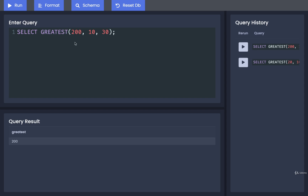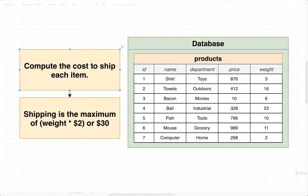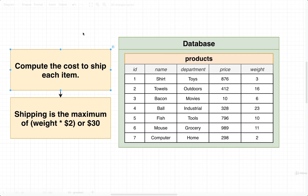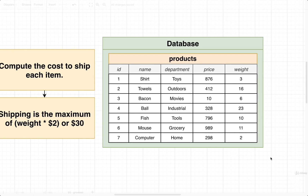But you might be curious where we would use something like this. We can very easily imagine how we might make use of GREATEST if we consider the following question. Let's say we want to compute the cost to ship each item in our products table, and the rule is that we have to find the greatest of two values: shipping costs the greater of the product's weight times $2 or $30.